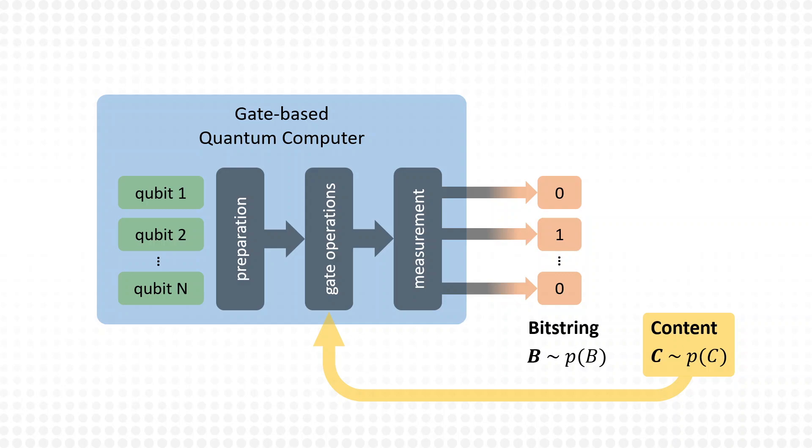To achieve this, content must be encoded as a bit string of suitable length, such that each bit string can be interpreted as a content instance. Then, the task is to find the right set of instructions that produce the desired distribution of bit strings for a given set of design rules.